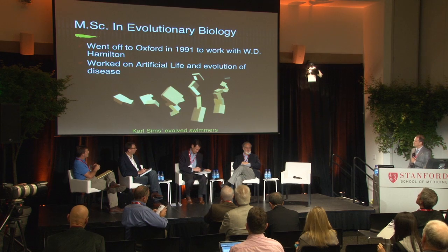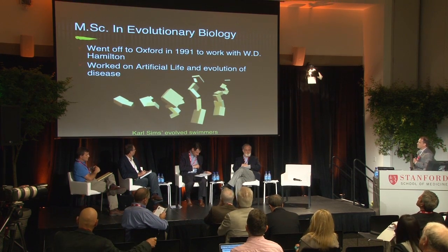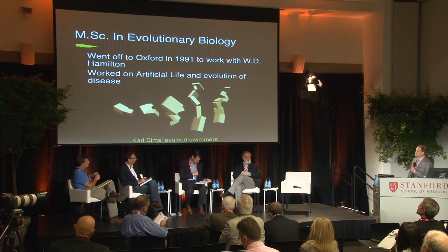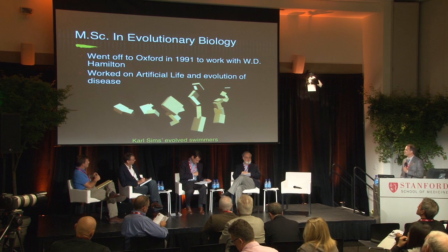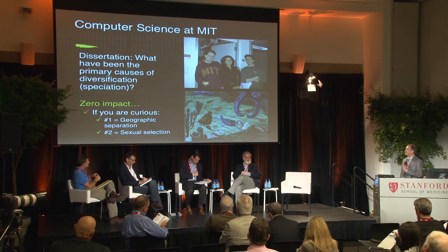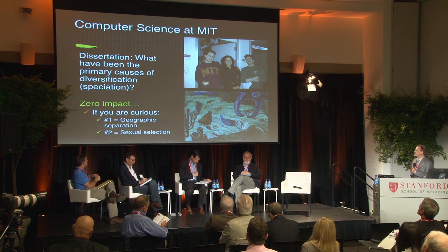I went off to Oxford to work with W.D. Hamilton for my master's degree in the field of artificial life, which is analogous to artificial intelligence, and did some projects in the evolution of disease. I then went back to MIT for a PhD in computer science. It's a little bit weird to hear a cancer talk from a computer scientist, but there you have it.